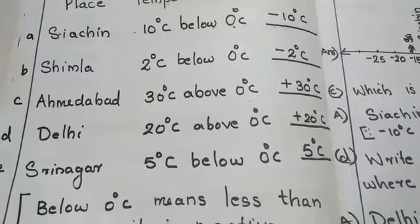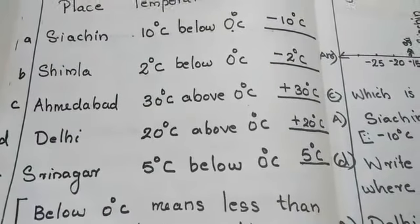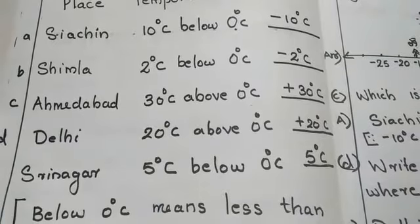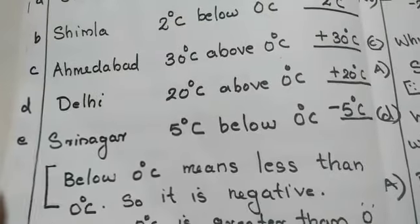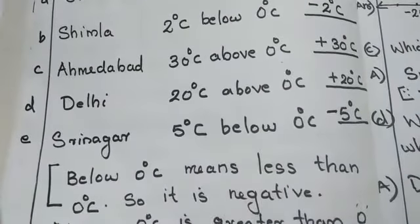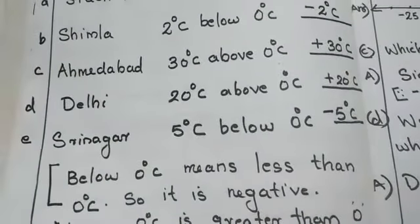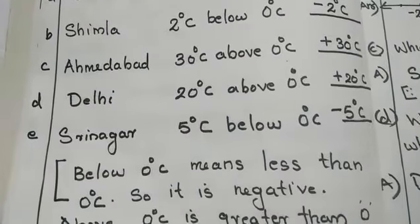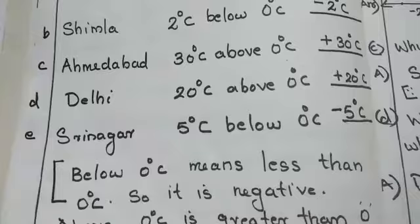Srinagar 5 degree Celsius below 0 degree Celsius is negative 5 degree Celsius. Below 0 negative. Above 0 positive.